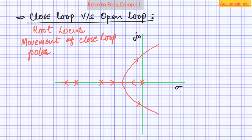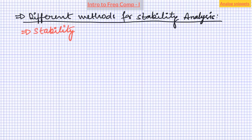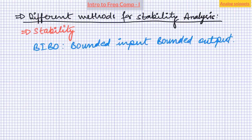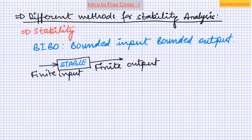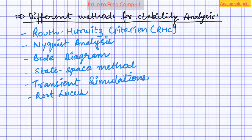Next we will define the term stability. There are in fact several ways to define system stability, ranging from very simple to very complex. In most engineering applications, stability is defined in the sense of bounded input bounded output — meaning that if a system always produces a finite output in response to a finite input, then it is stable. There are many methods to determine system stability, each with their own advantages, but by far the most used method in analog design is the Bode diagram. It is also highly recommended to verify stability using transient simulations.